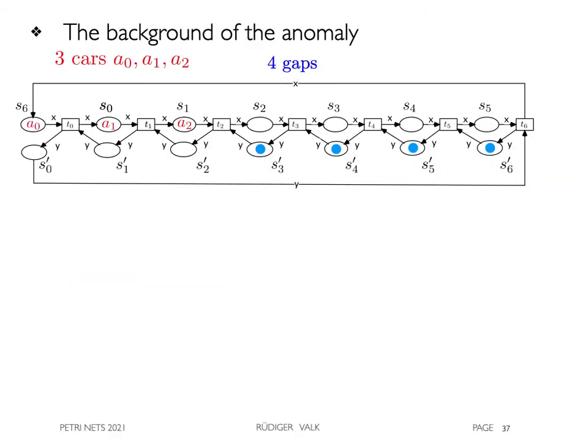For the topic as given in the title of this presentation, we start with a colored net for c equals 3 cars but g equals 4 gaps, replacing the co-cars. Here the occurrence of transition t2 is shown. The anomaly is not observable here as well in the behavioral equivalent cycloid 4333.